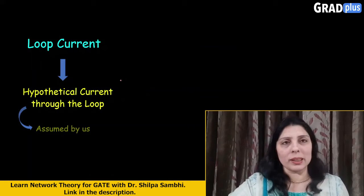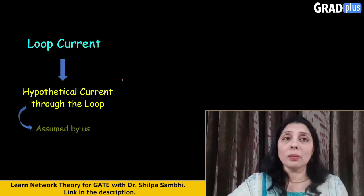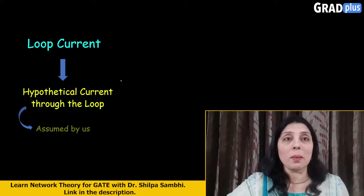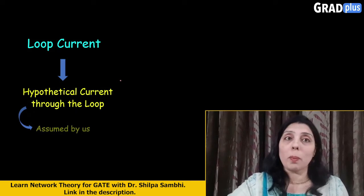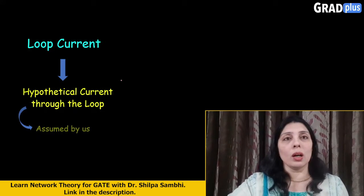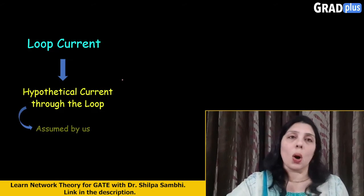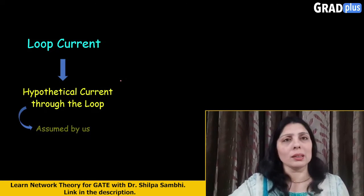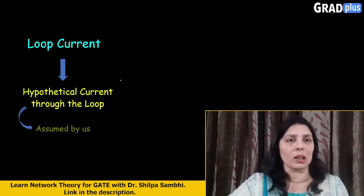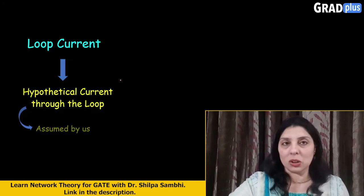So what is a loop current basically? Loop current is a hypothetical current. It is an imaginary current which is assumed by us. To use Kirchhoff's voltage law or the mesh analysis, we assume that there is some current which is flowing within that particular loop. So that is just an imaginary current.